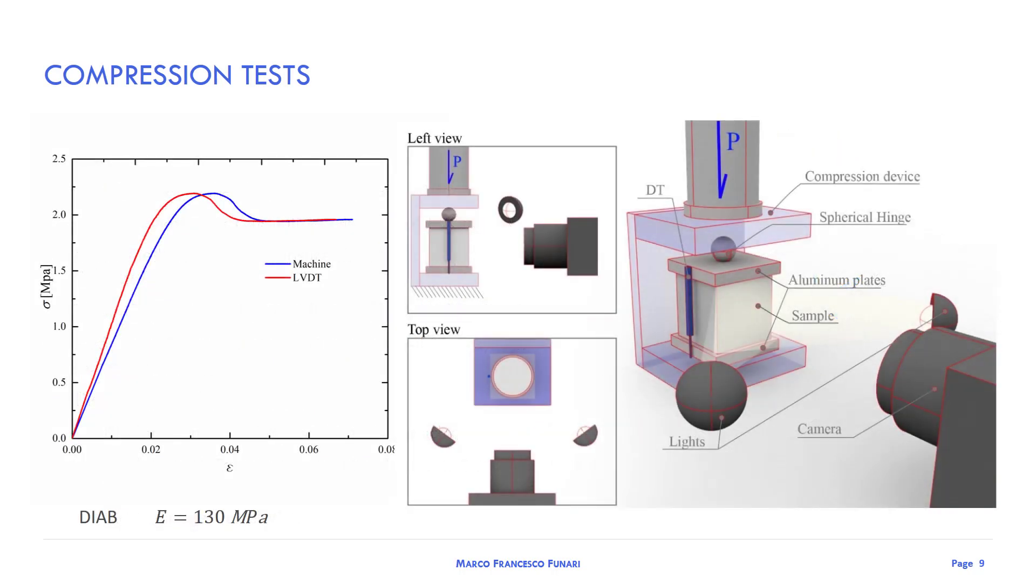In this slide I am reporting the experimental setup that we proposed. The load is detected by using a machine with a load cell of 15 kN. In order to detect the strain occurring in the sample, we adopted three approaches: the vertical displacement of the machine, the second one by using an LVDT, and the third one by measuring the strain fields optically by adopting the digital image correlation.